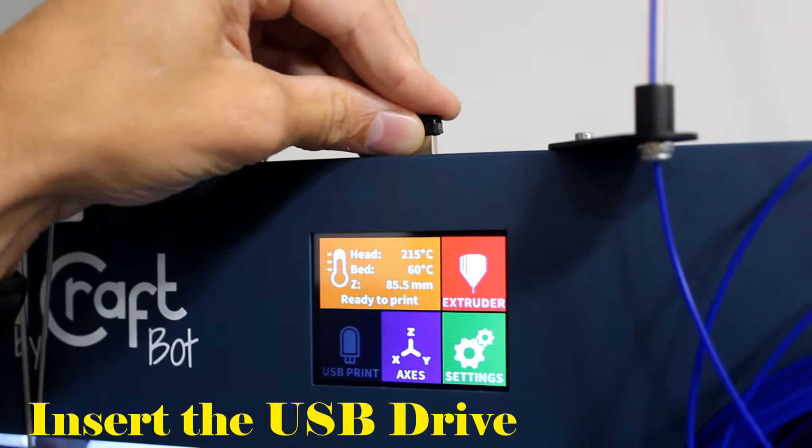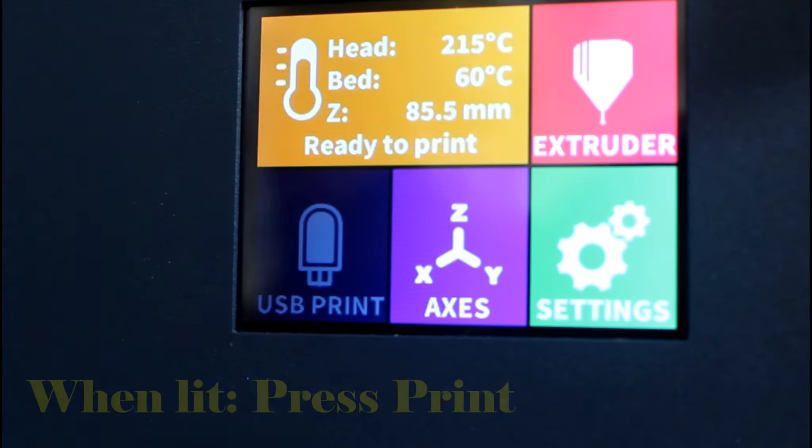Insert the USB drive and from the menu select USB print and then print your file.